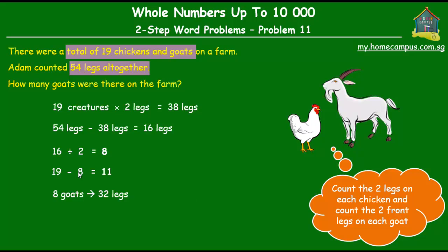We calculated 8 goats, so 8 goats would mean 32 legs belonging to the goats. We calculated 11 chickens, and 11 chickens would mean 22 legs belonging to the chickens. Altogether, 32 legs plus 22 legs equals 54 legs. So indeed our calculation of 8 goats and 11 chickens is correct.